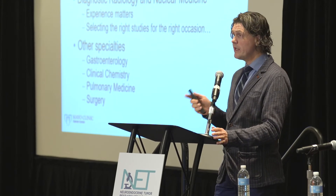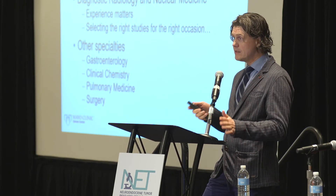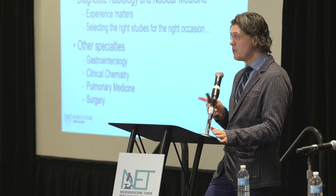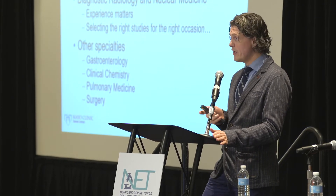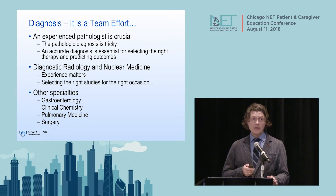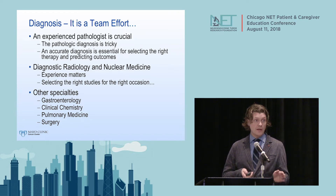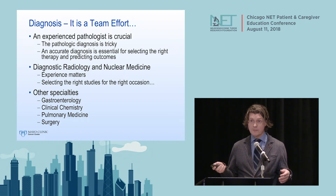Diagnosing neuroendocrine tumors is truly a team effort—no single person can do it all. The crucial role is the pathologist. These are tough tumors to read and are very commonly misread by pathologists who don't see a lot of NETs. I see a handful of patients every year at Mayo who come in with a NET that is misdiagnosed—sometimes it isn't a NET at all, or it's a high-grade tumor read as low-grade, leading to aggressive chemotherapy the patient may not have needed.